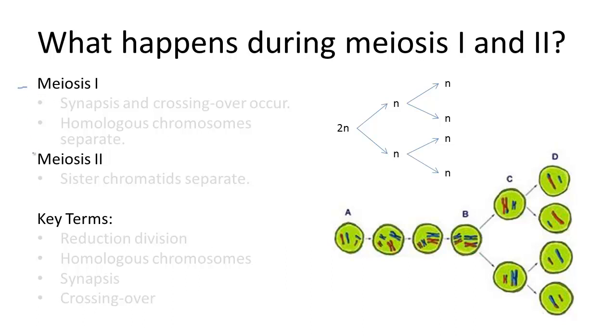Meiosis is divided into two parts, meiosis I and meiosis II, which are again divided into four more parts.